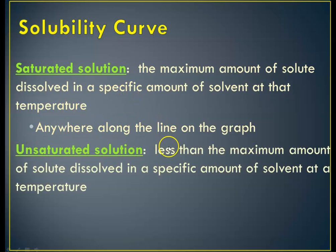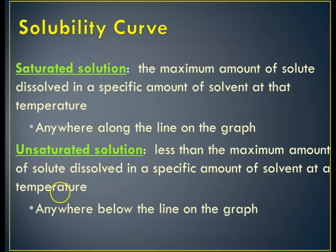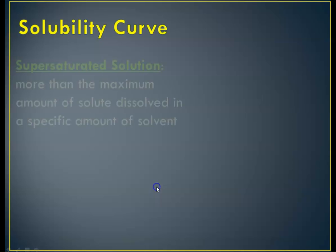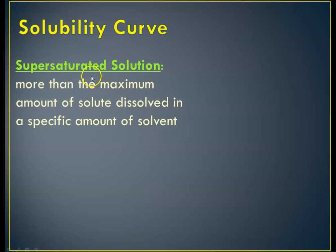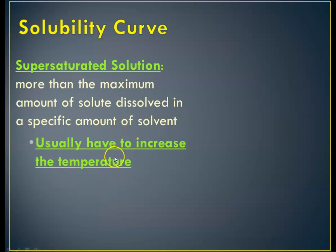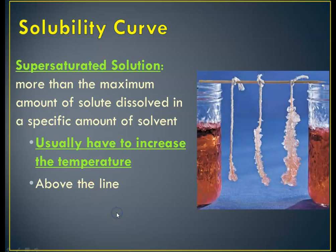An unsaturated solution has less than the maximum amount of solute dissolved in a specific amount of solvent at a given temperature — anywhere below the line on the graph represents an unsaturated solution. A supersaturated solution has more than the maximum amount of solute that can be dissolved in a given amount of solvent at a given temperature. In order to achieve this, you usually have to increase the temperature of the solvent. Supersaturated represents above the line.